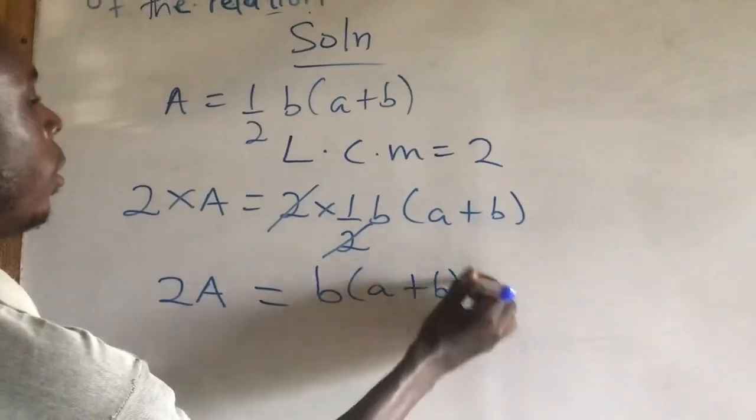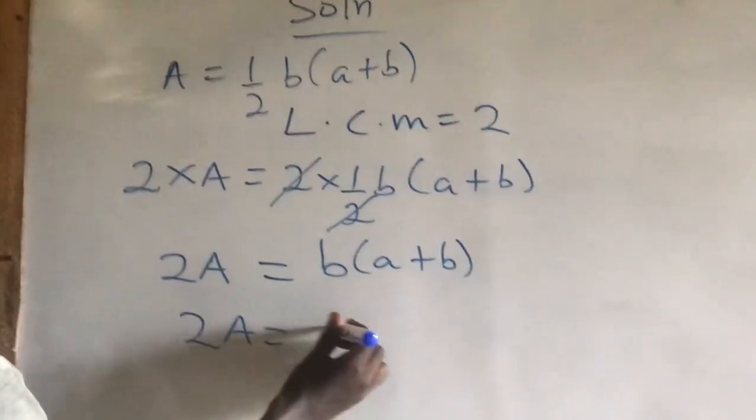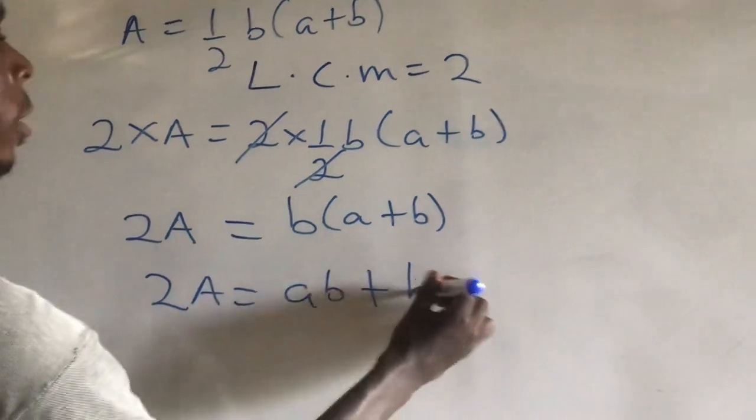So if we expand, it becomes this times this is AB, plus this times this is B squared.